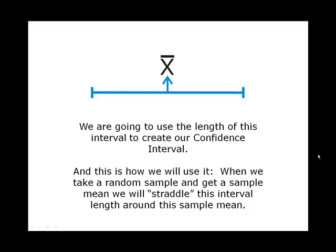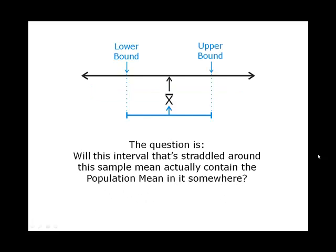We are going to use the length of this interval to create our confidence interval. When we take a random sample and get a sample mean, we will straddle this interval around the sample mean. The question is: will this interval straddled around the sample mean actually contain the population mean in it somewhere?